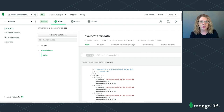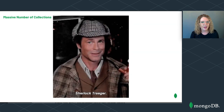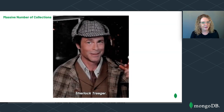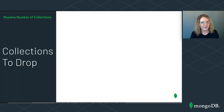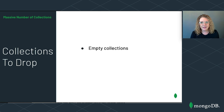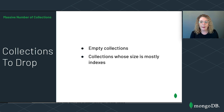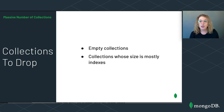In this example, Leslie removed unnecessary collections by changing how she stored her data. Sometimes you won't immediately know what collections are unnecessary and will have to do some investigating. If you find an empty collection, you can drop it. If you find a collection whose size is made up mostly of indexes, you can probably move that data into another collection and drop the original. You might be able to use $merge to move data from one collection to another.